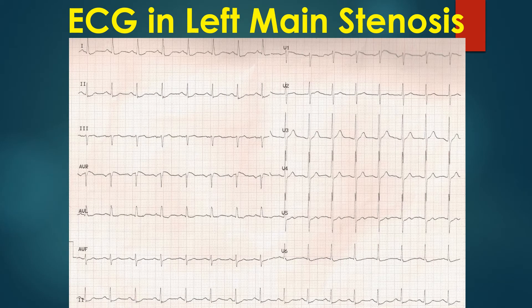A similar ECG pattern can also occur in severe proximal triple vessel disease. The previous ECG shown here for comparison shows minimal changes, with minimal ST segment elevation in AVR as well. This highlights the need for serial ECGs in acute coronary syndrome, as initial ECGs may be near normal even in those with severe disease.